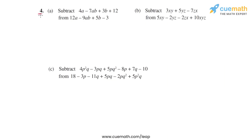In question 4, we have these three parts and in each part we are given two expressions and we have to subtract the first expression from the second. In each part we will write the two expressions in separate rows such that the like terms are written one below the other, and then carry out the subtraction process. Let's start with the first part.